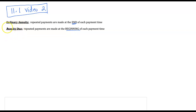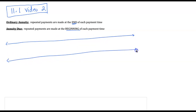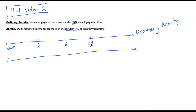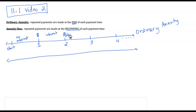Let me give a brief display of the differences. For an ordinary annuity, if this is our start — say January 1 — we have time period one for the first payment, time period two, time period three, time period four, and so on. We make the payment at the end of the first time period. At that point, there is no interest calculated because there's no money in the account. Then interest calculates after that, then we make our second deposit, then interest, then a third deposit and interest, and a fourth deposit.